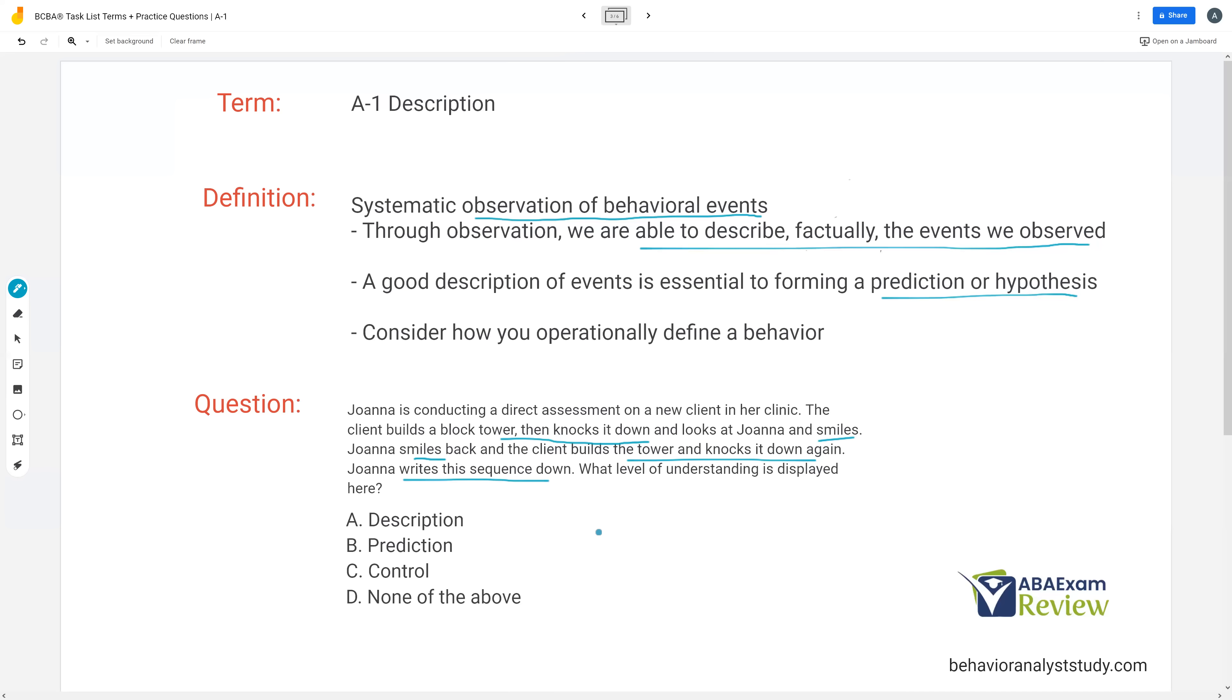However, Joanna didn't predict anything. She didn't manipulate anything. All she did was write down what she observed, and that's description. She's just describing what she's seeing. She's at the very beginning of this life cycle, with this particular person.